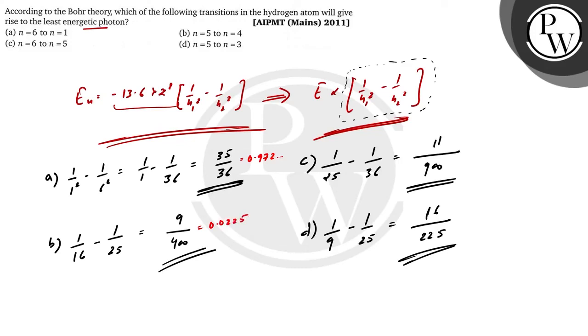If you see C, 11 divided by 900, 0.012 and so on. And if you see D, D is 16 divided by 225, 0.071 and so on.